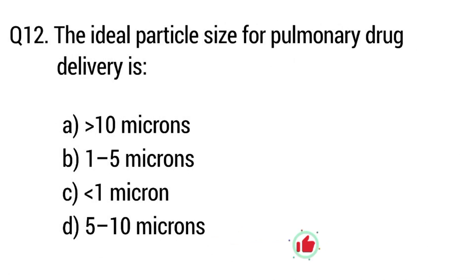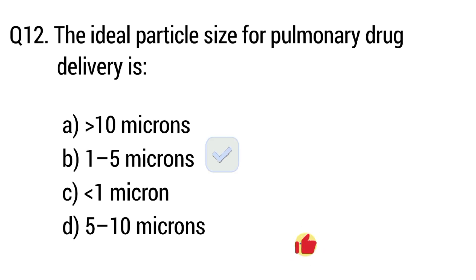Question number 12. The ideal particle size for pulmonary drug delivery is? The right answer is option B: 1 to 5 microns.